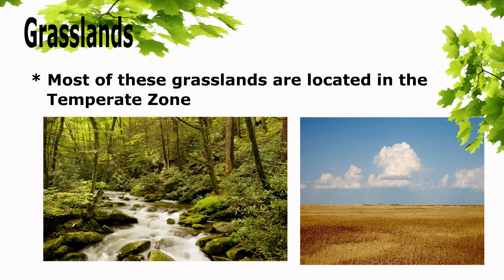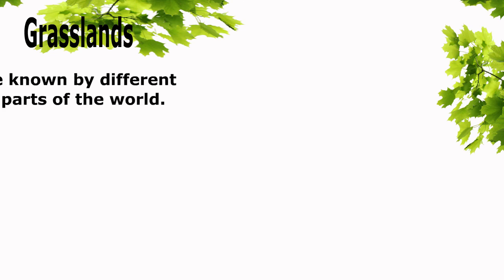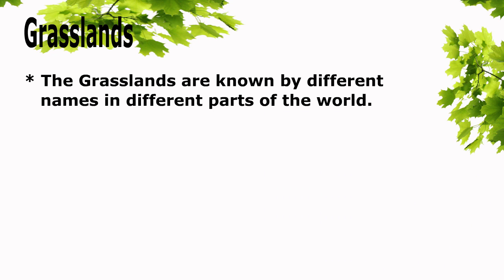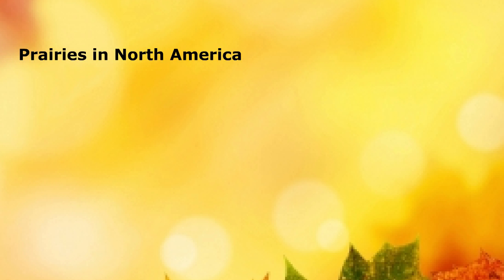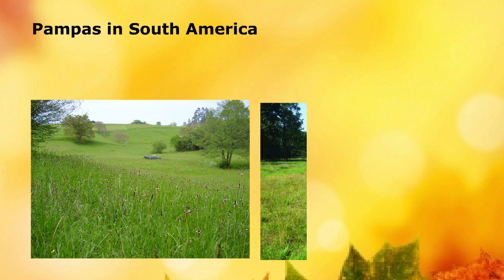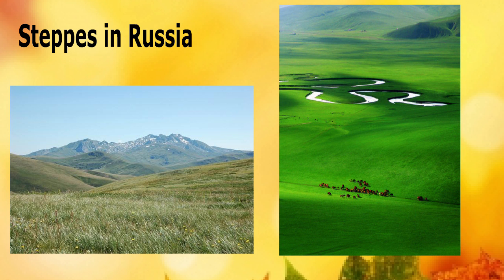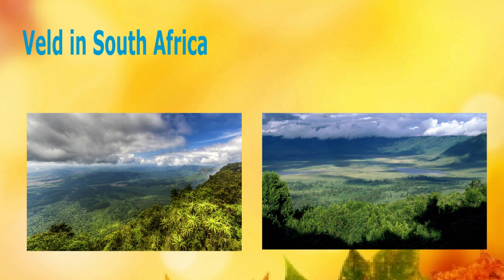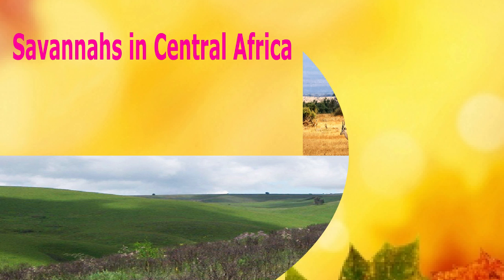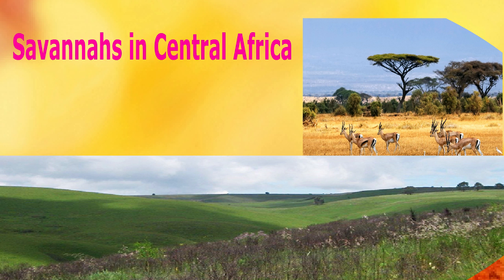The grasslands are known by different names in different parts of the world, such as prairies in North America, pampas in South America, steppes in Russia, veld in South Africa, downs in Australia, and savannahs in Central Africa.